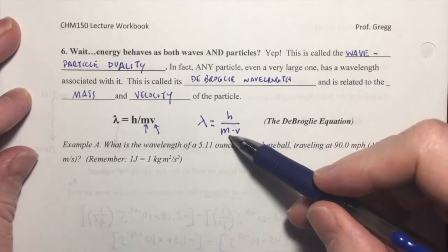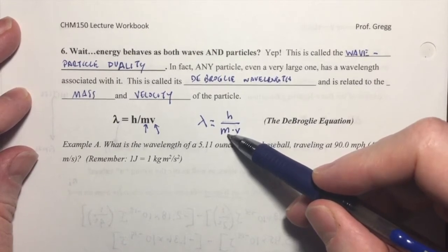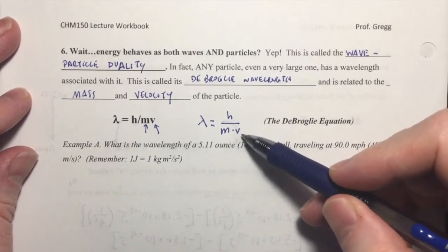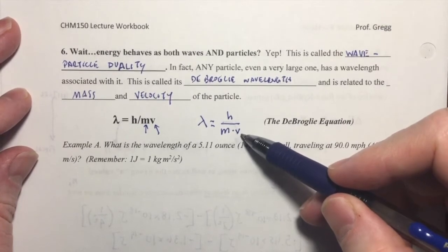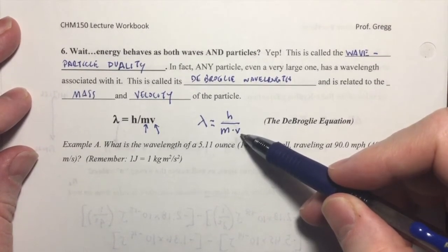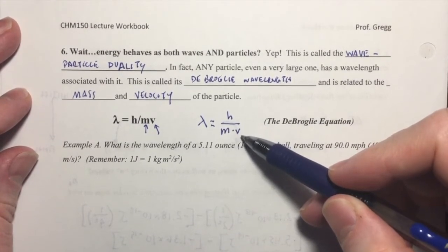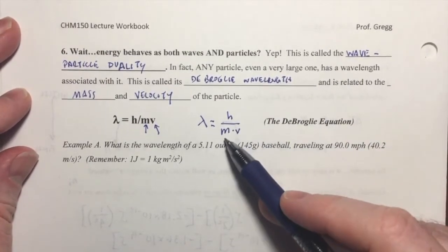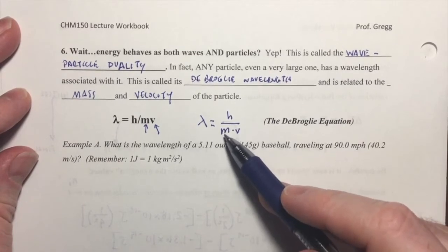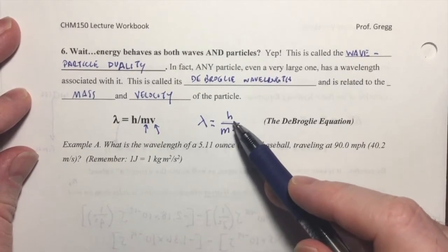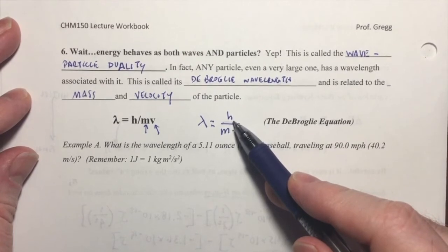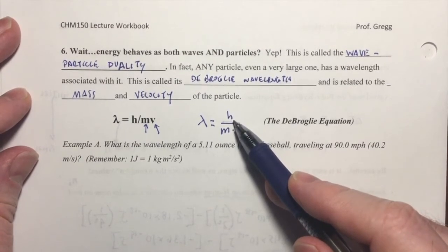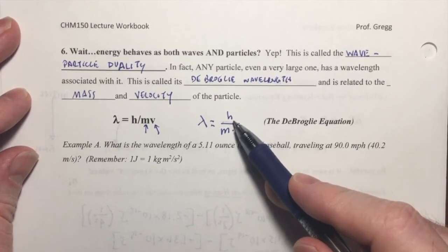I want to be very careful that you notice that this is m for mass and not m for meters. And that this is v for velocity or speed and not nu, that Greek letter for frequency that looks sort of like a v. Okay? What units of mass must we have in this equation? Well, you remember that the units for Planck's constant are joule seconds.